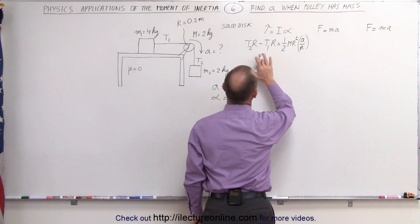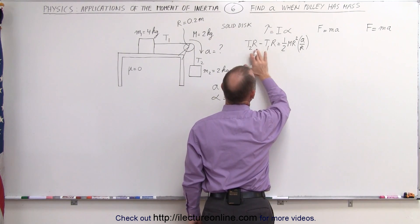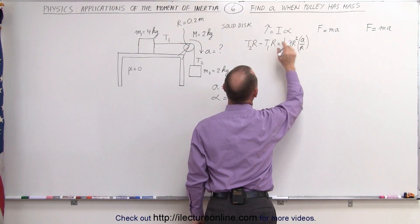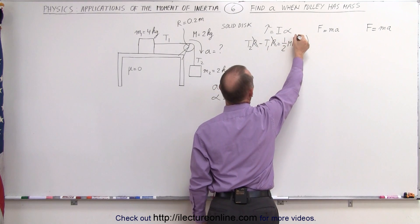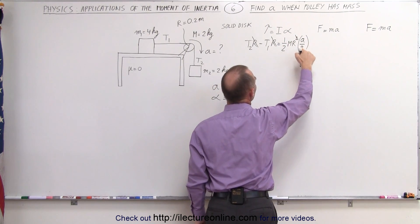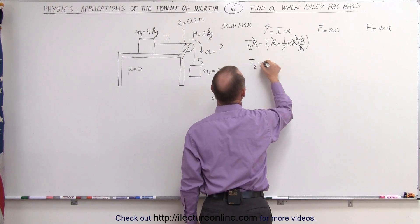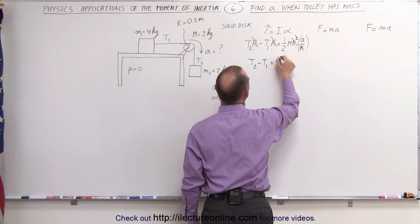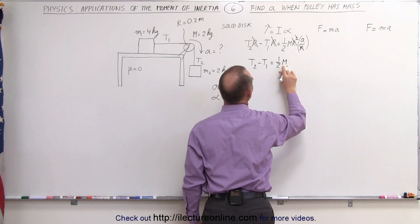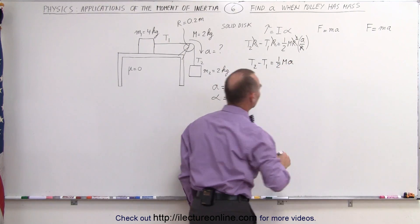Right away we can see that the left side has an R in each term. On the right side we have an R squared, so these R's cancel out with one of those, and this R in the numerator cancels out with the R in the denominator. Like this, the equation simplifies to T2 minus T1 equals one-half the mass of the pulley times the linear acceleration.